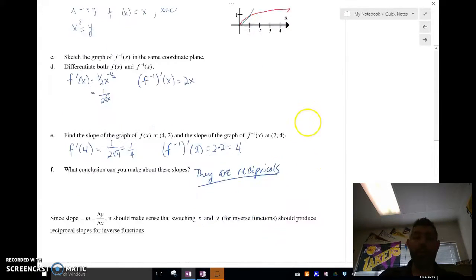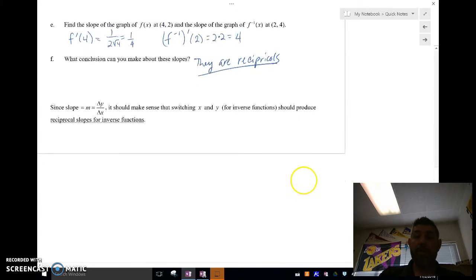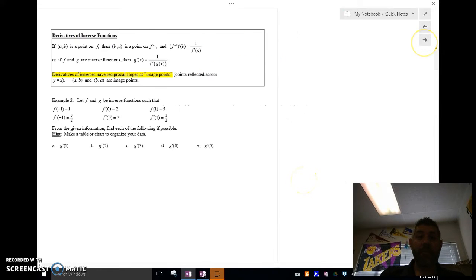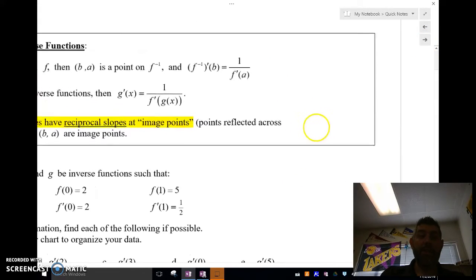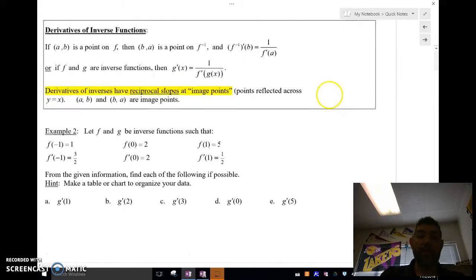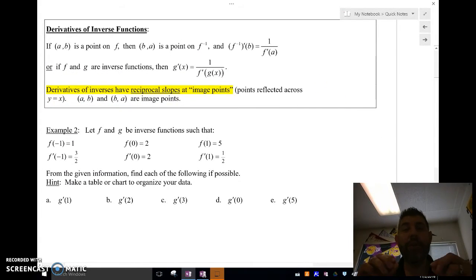Okay, so in general, here's what we have, guys. We have that the derivative of inverse, it's going in and out. The derivative of inverse functions. If a point (a, b) is on f, then the point (b, a) is on f inverse, and the derivative of the inverse at b is 1 over the derivative of the function at a.